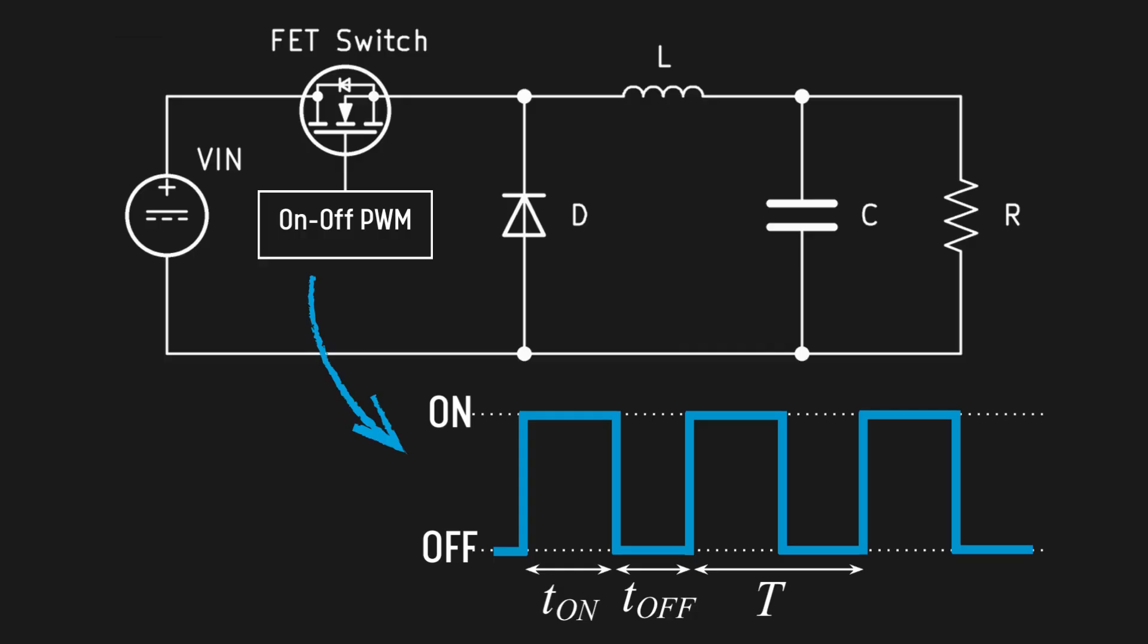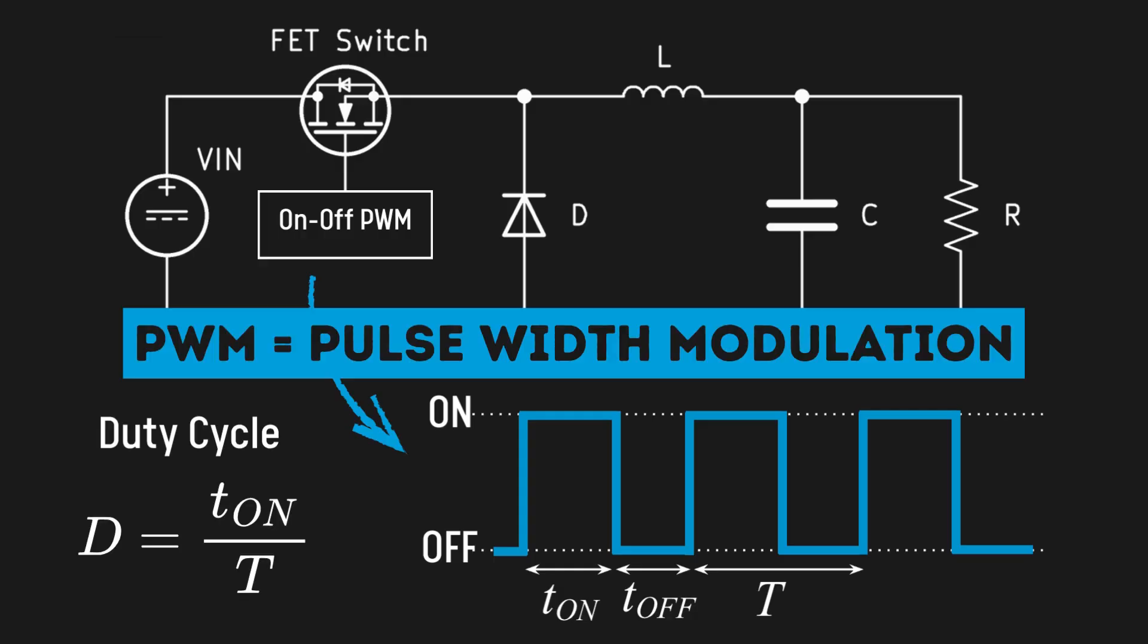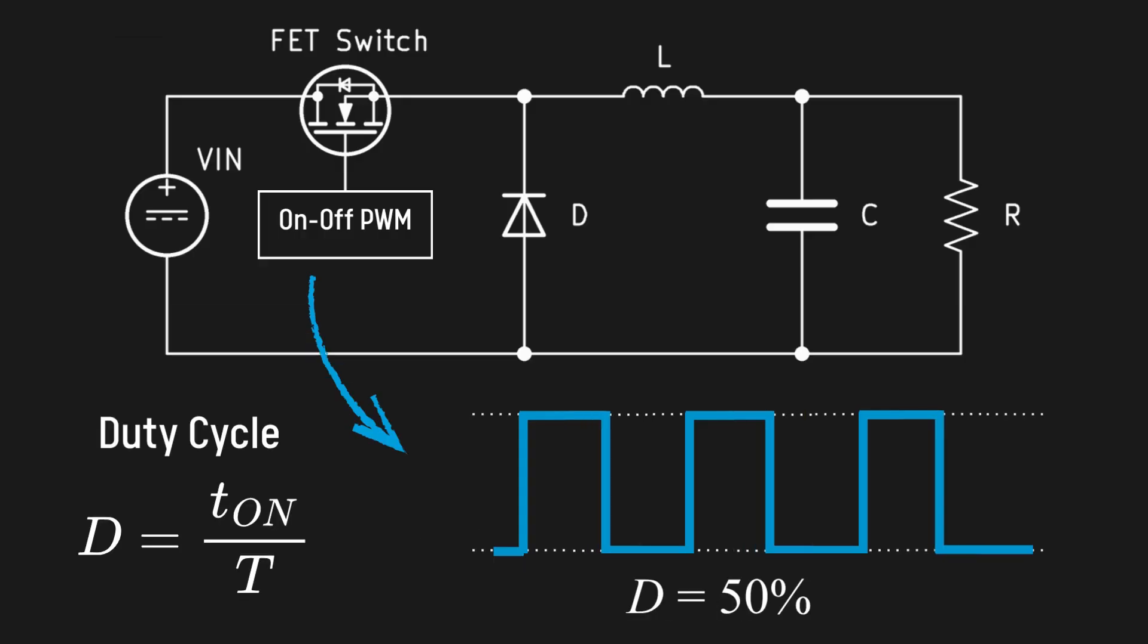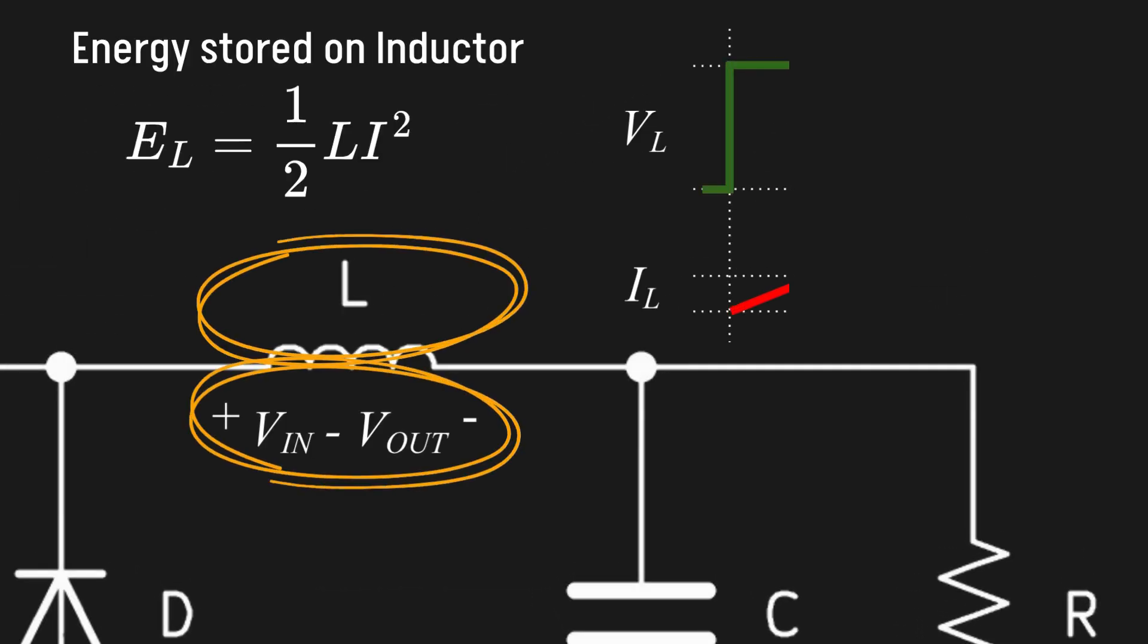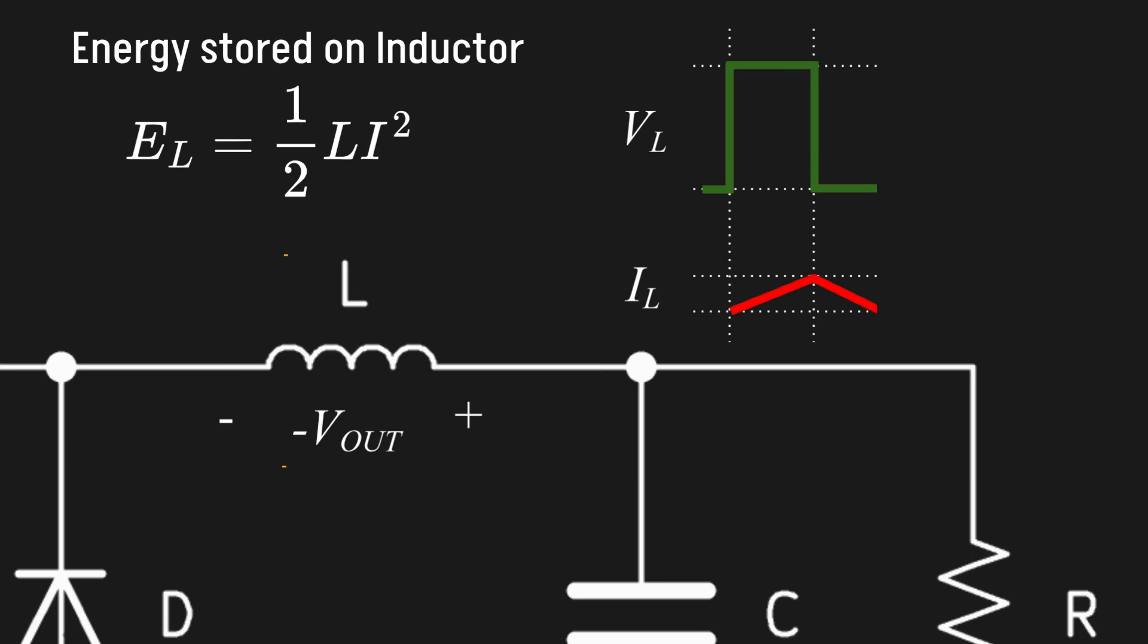By quickly alternating the switch between on and off with a PWM signal and a certain ratio, energy is transferred from the input to the output in chunks. Instead of dissipated, the excess energy flowing on the on state is stored on the inductor and delivered to the load during the off state.